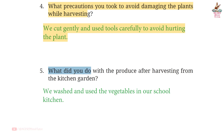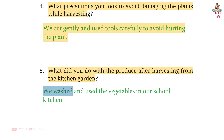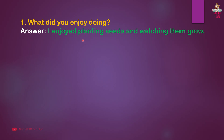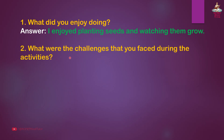Question 5: What did you do with the produce after harvesting from the kitchen garden? Answer: We washed and used the vegetables in our school kitchen. Page 33, Think and Answer — Question 1: What did you enjoy doing? Answer: I enjoyed planting seeds and watching them grow.